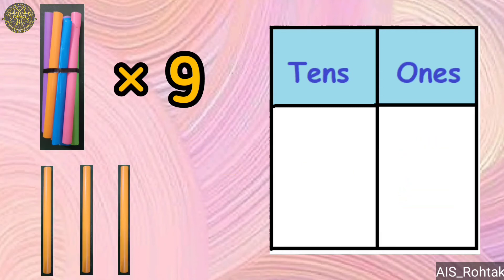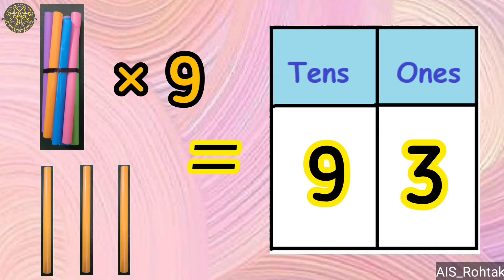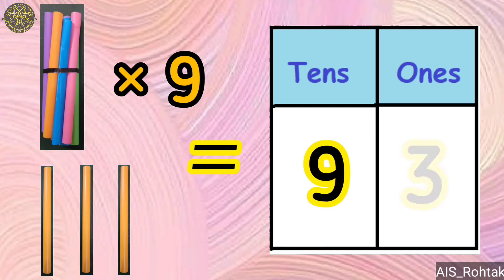Nine bundles and three loose sticks make the number 93 — nine under the tens column and three under the ones column.